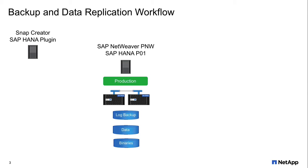Now let's have a look at the landscape we are using for our videos and demos. In the center, there's a production site with a NetApp HA pair in an ONTAP cluster. We have installed a HANA system, PS01. On top of the HANA system, there's an SAP NetWeaver with SID PNW.